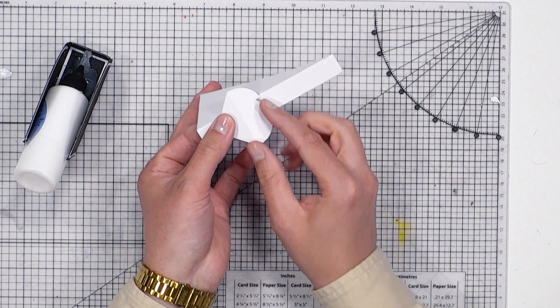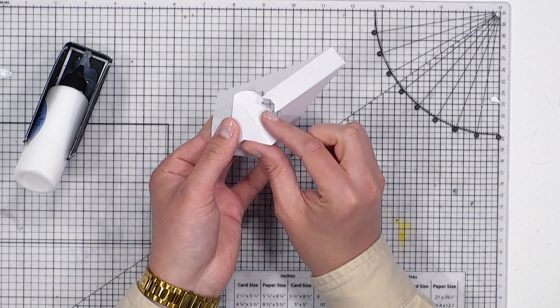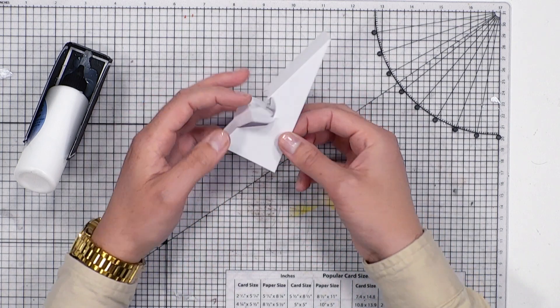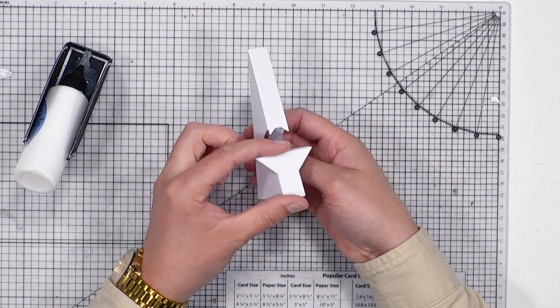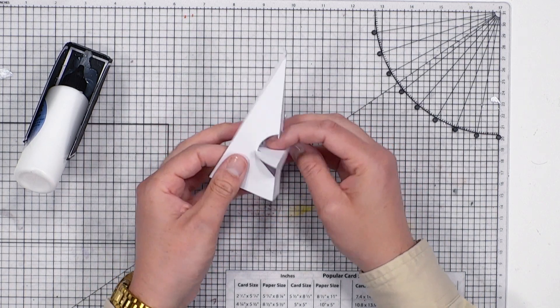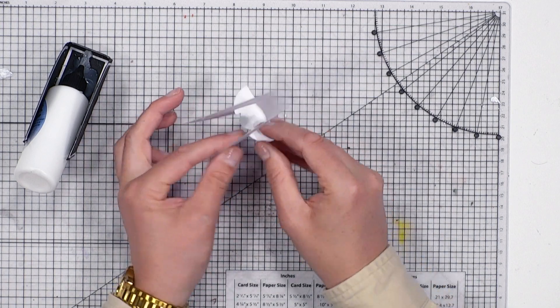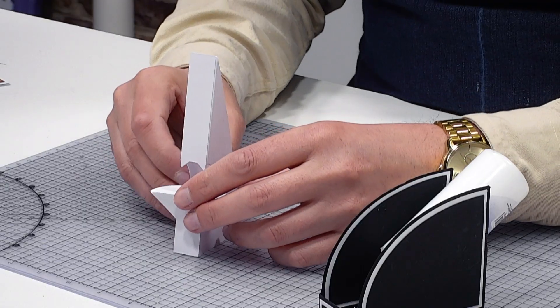Now this is where the mechanism comes into play. You've got a score line that runs through the center, so as I fold this you can see that is now visible. And when you fold it back that then locks into the back just like that, creating that signature stand.